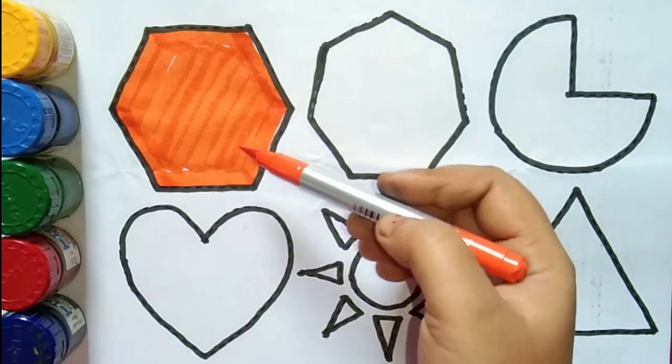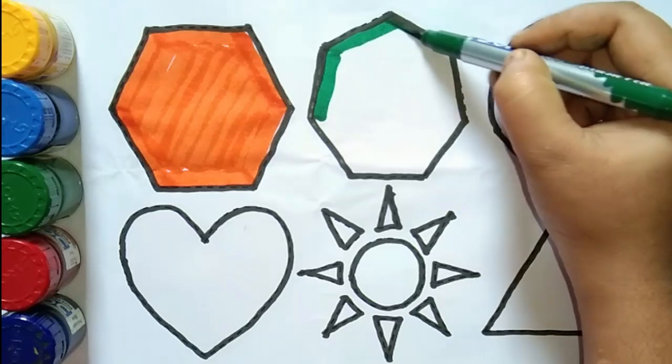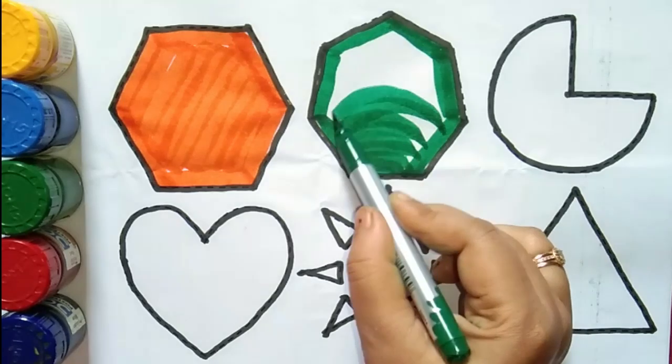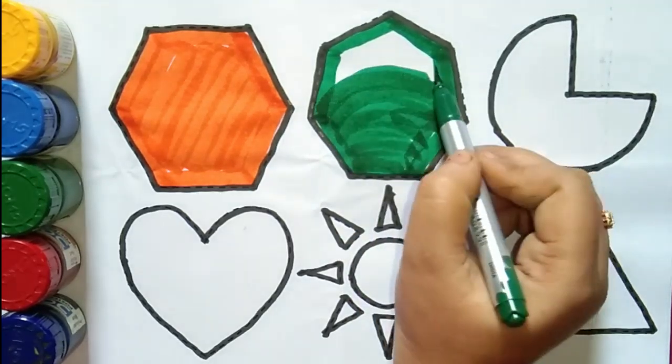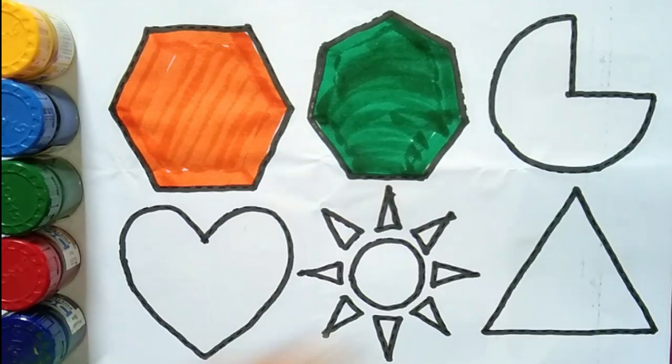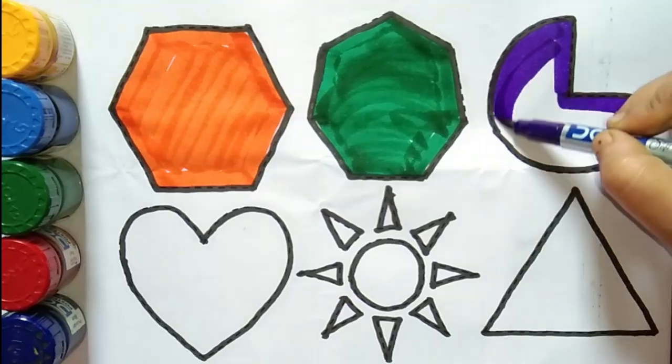Orange color, black color. This is yellow color. This is blue color, orange color, green color.